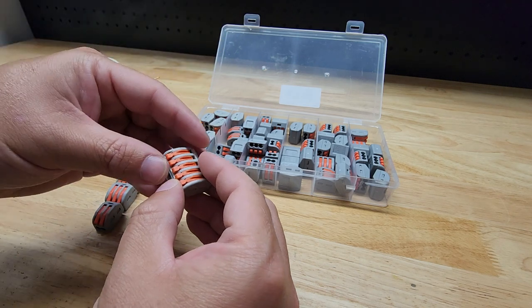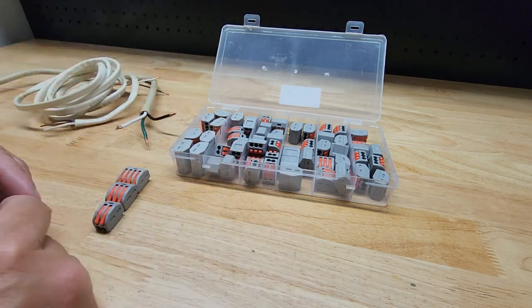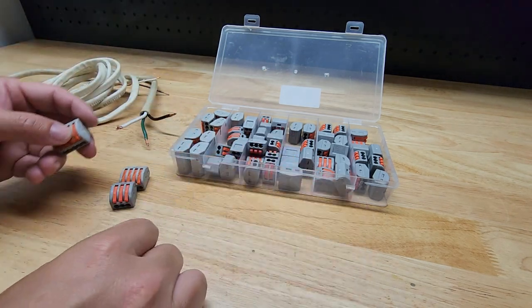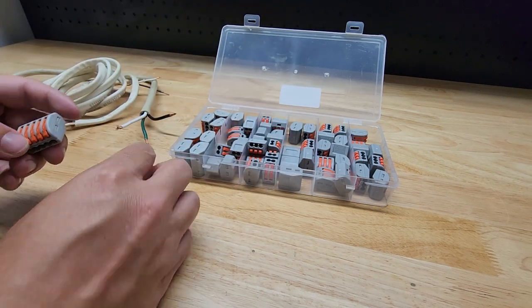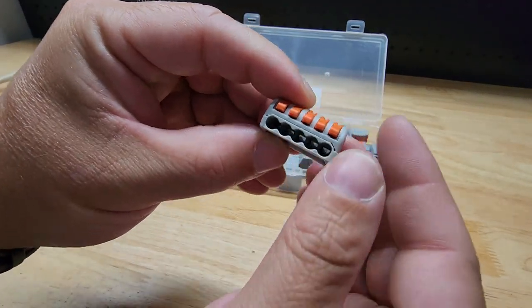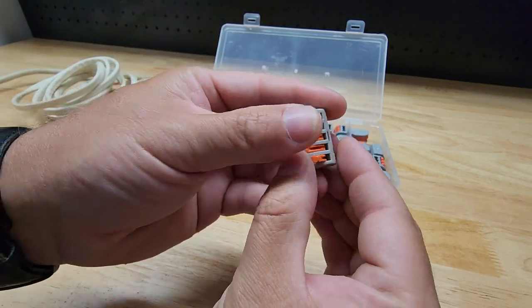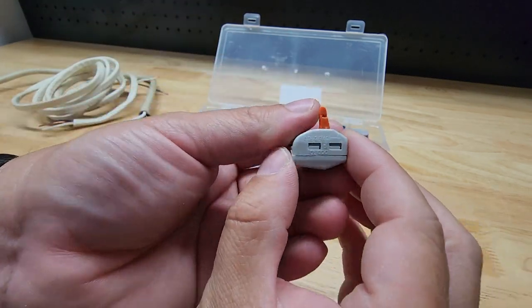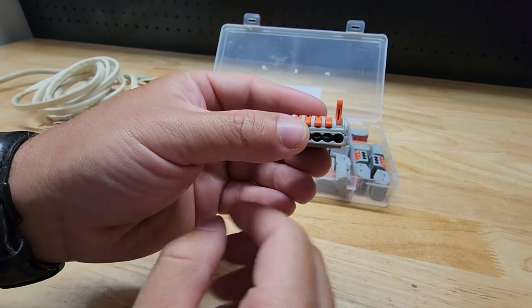This is the 60-pack here. You get all the way from two terminal connectors up to five. If we look at the five, you can see all the different individual terminals. You just lift up the lever, put it all the way in the top position, and that will release the wire or open the hole so you can put in a wire.